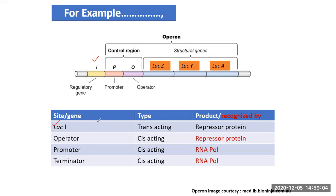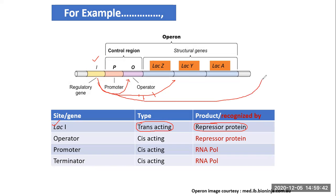Lac I is a trans-acting regulatory element because it functions by coding for a diffusible product — the repressor protein. This diffusible repressor protein can act on the operator located close by, on the same site located at a distant place, or on an altogether different operator located on a different molecule.